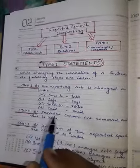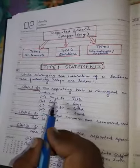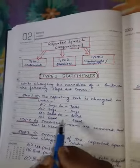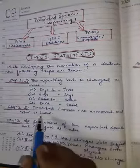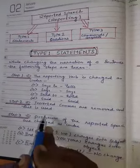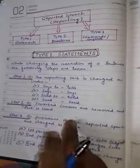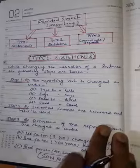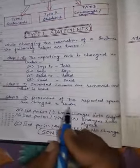Step 1: According to tense, the reporting verb is changed. If it is 'says,' it will become 'tells.' If it is 'said,' it will become 'told.' And 'say' will remain 'say.' Step 2: Inverted commas are removed and 'that' is used. After the comma, we shall use 'that' and remove the inverted commas. In Indirect Narration, there will be no inverted commas.